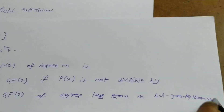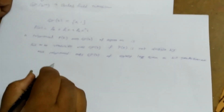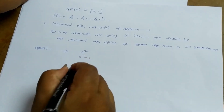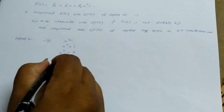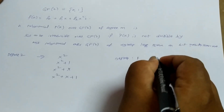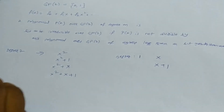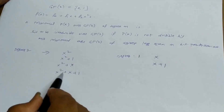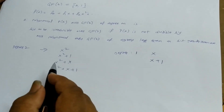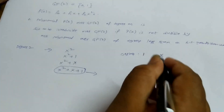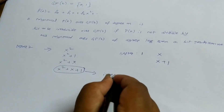For degree 2, the different polynomials are X², X²+1, X²+X, and X²+X+1. For degree 1, the polynomials are X and X+1. To find the irreducible polynomial of degree 2, we need to find which polynomial is not divisible by X or X+1. Only X²+X+1 is not divisible by either X or X+1, so X²+X+1 is the irreducible polynomial.